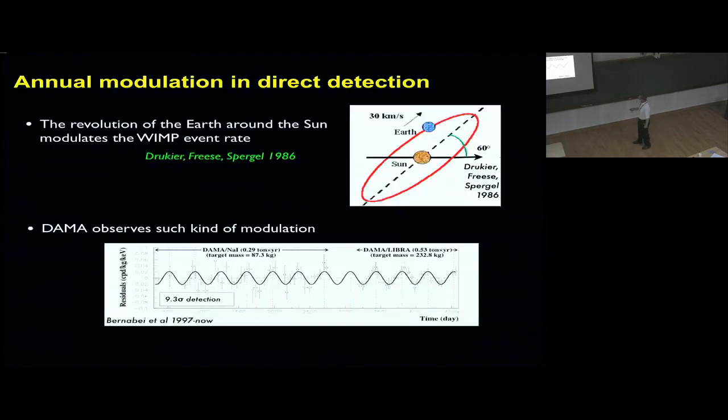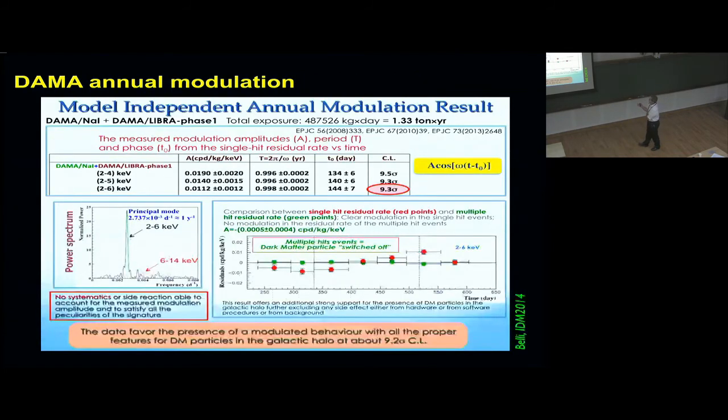Let me move to the DAMA annual modulation, which is another of these things that have been around for many years from 1999 to 2007 onward. Statistically there is a modulation, no doubt—nine sigma detection for many years. We expect such a modulation from WIMPs just due to the motion of the Earth around the Sun. You get a higher flux when the Earth and Sun move together in the galaxy and a lower flux when they move in opposite directions.